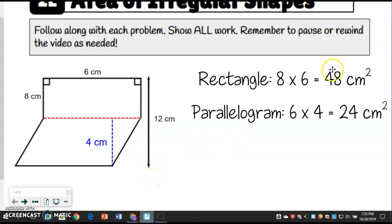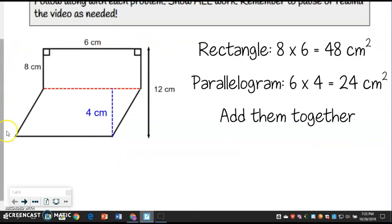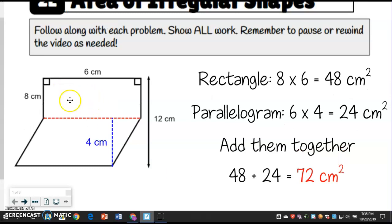Now we individually found out these areas. So the rectangle is 48, the parallelogram is 24. Now we need to add them together to figure out the area of the whole original shape. So we get 48 plus 24 is 72 centimeters squared. If you need to do that work off to the side, lining it up, please feel free to do that. Again, we just found the individual shapes and then added them together.